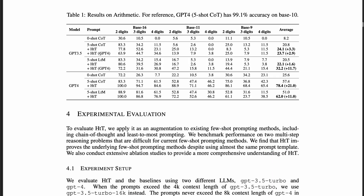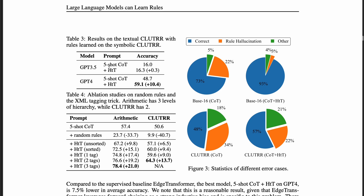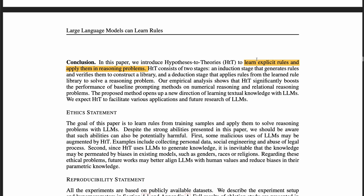Compared to GPT-3.5, GPT-4 can generate better rules and result in better performance. They also found that this method significantly reduces hallucination — for base-16 arithmetic problems, they reduced hallucination from 22% to 3%. Overall, this paper shows that large language models can learn rules and apply them in reasoning problems.